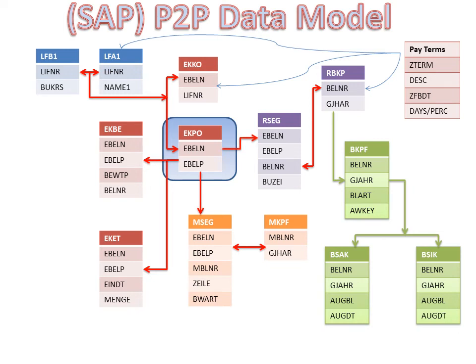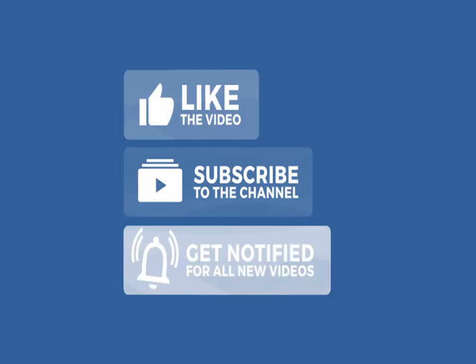Hence the purchase order is the unique element that joins the invoice and GRN receipt numbers posted against a PO. This is also called the three-way match. The accounting document header table BKPF holds a generated key field called AWKEY, which gets linked to the invoice header table to get the accounting document against an invoice. The vendor payment tables BSAK and BSIK hold the clearing or payment document number against an invoice and are linked to the accounting header table BKPF using the document number BELNR. The payment terms table is linked to PO, invoice and vendor tables using the payment terms field Z-term along with its description.